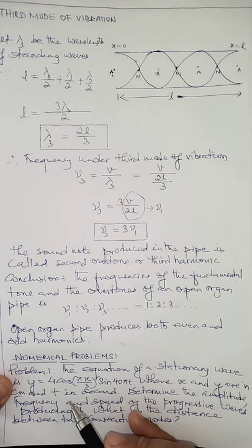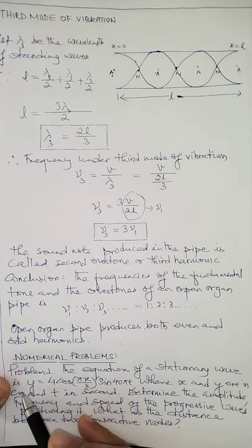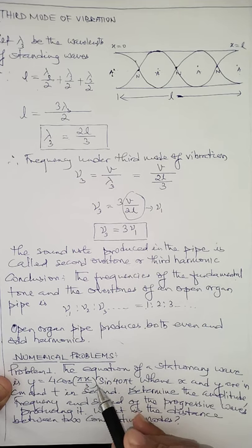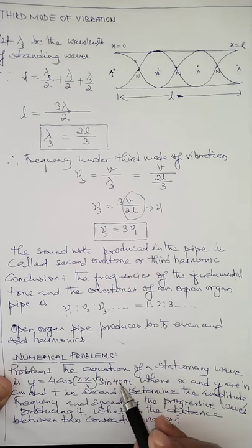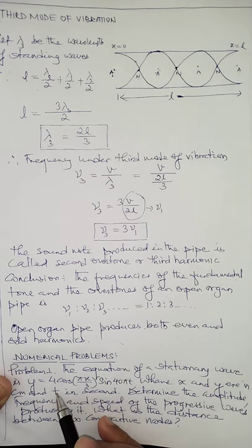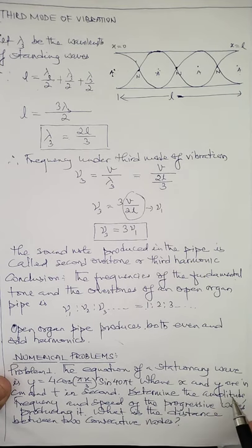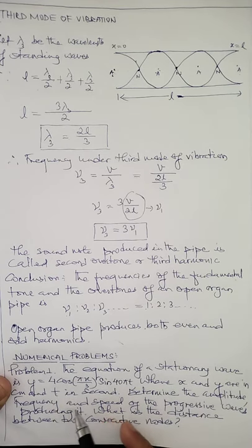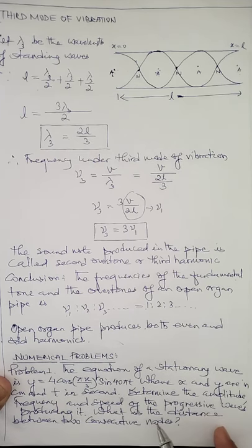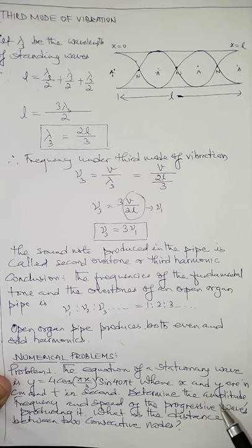This is a problem based on stationary waves. The equation of a stationary wave is y = 4 cos(πx/3) sin(40πt), where x and y are in centimeters and t is in seconds. We need to determine the amplitude, frequency, and speed of the progressive wave producing it, and also calculate the distance between two consecutive nodes.